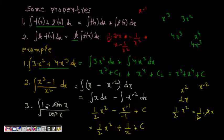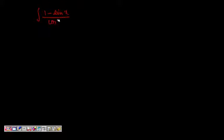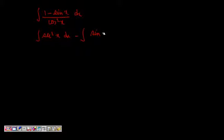Last example: integrate (1 − sin x)/cos²x dx. This is again a quotient, so we split by the denominator: ∫1/cos²x dx − ∫sin x/cos²x dx, which is ∫sec²x dx − ∫sin x · sec²x dx.